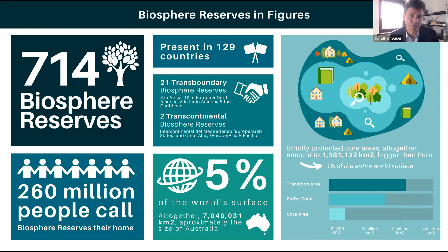What does the biosphere reserve network look like today? There are 714 biosphere reserves as we speak, with 260 million people within them. They're present in 129 countries. 21 of those biosphere reserves are transboundary and two of them are transcontinental. Biosphere reserves cover five percent of the world's surface, and their core areas cover one percent of the world's surface — so really quite a broad area in the world.